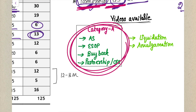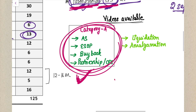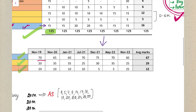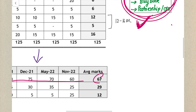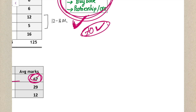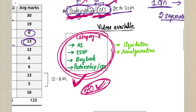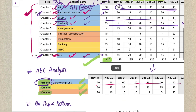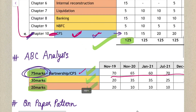You need not go anywhere - find the playlist link below in the description box and you can prepare all your Category A chapters. As you can see, the weightage of Category A comes for around 60 to 75 marks in the exam, with an average weightage of 67 marks. So definitely 70 marks of your exam will be secured if you watch these videos and practice the sums.